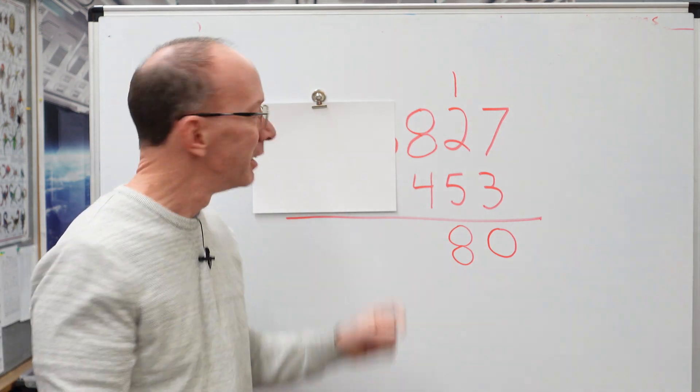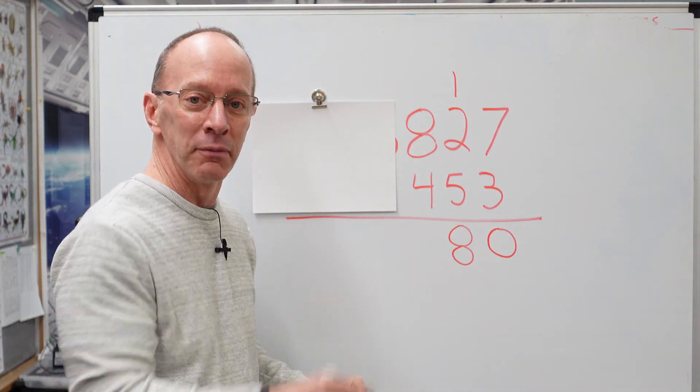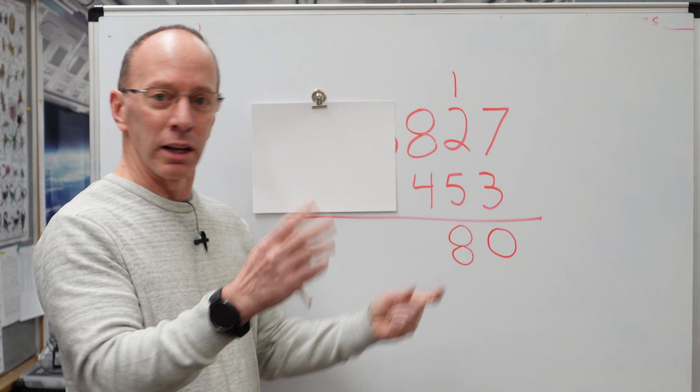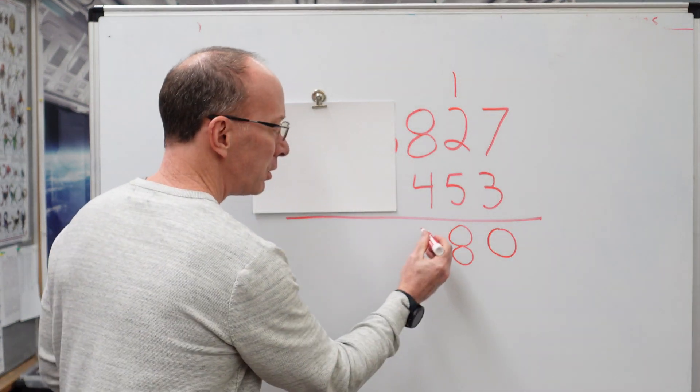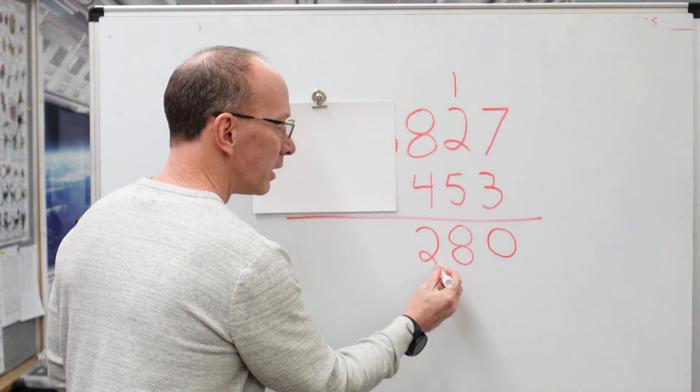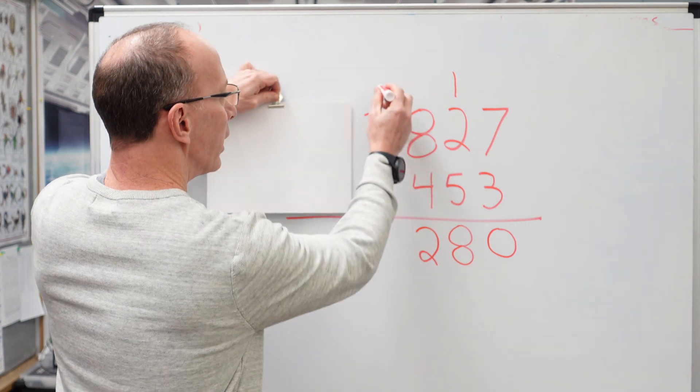All right. So let's move it over. Step by step. Eight plus four, eight, nine, ten, eleven, twelve. I love adding like that. See, put the two right here and you put the one right over here.